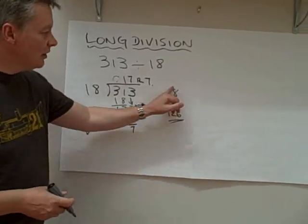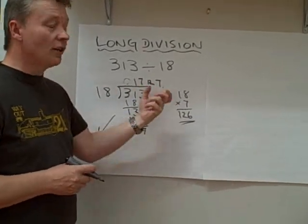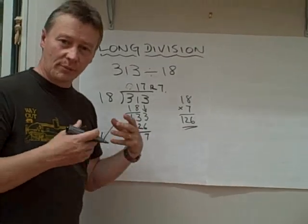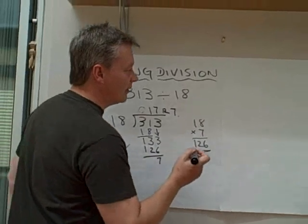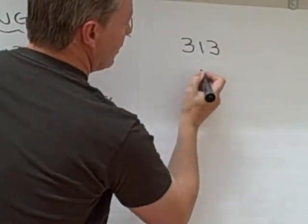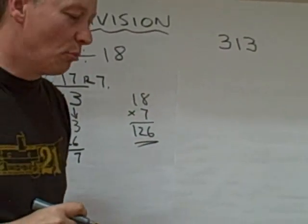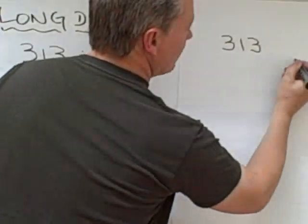The other method doesn't use as much multiplication, but it allows us to take little chunks of 18, because 18 multiplies each time. So I'm going to write it slightly differently. My question is, how many times can I divide 313 by 18?